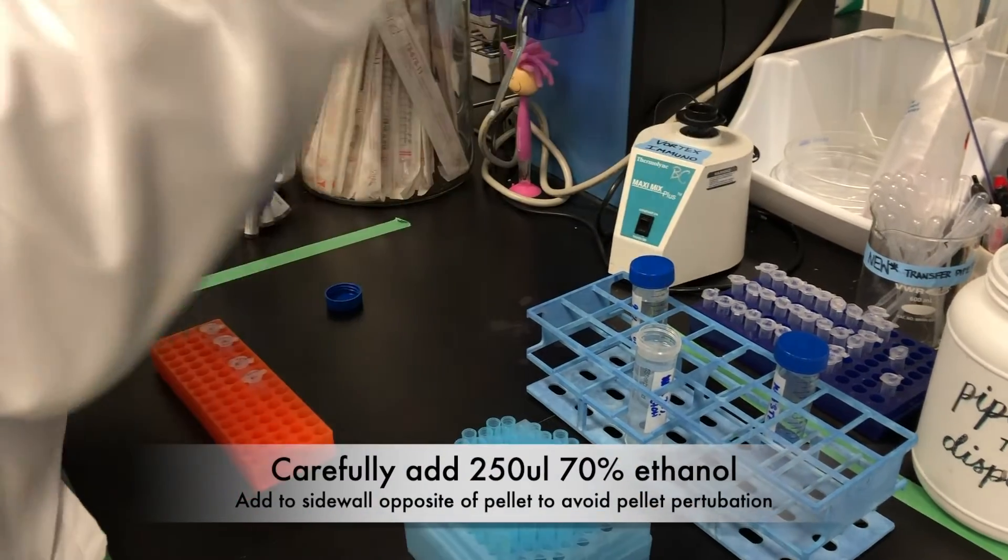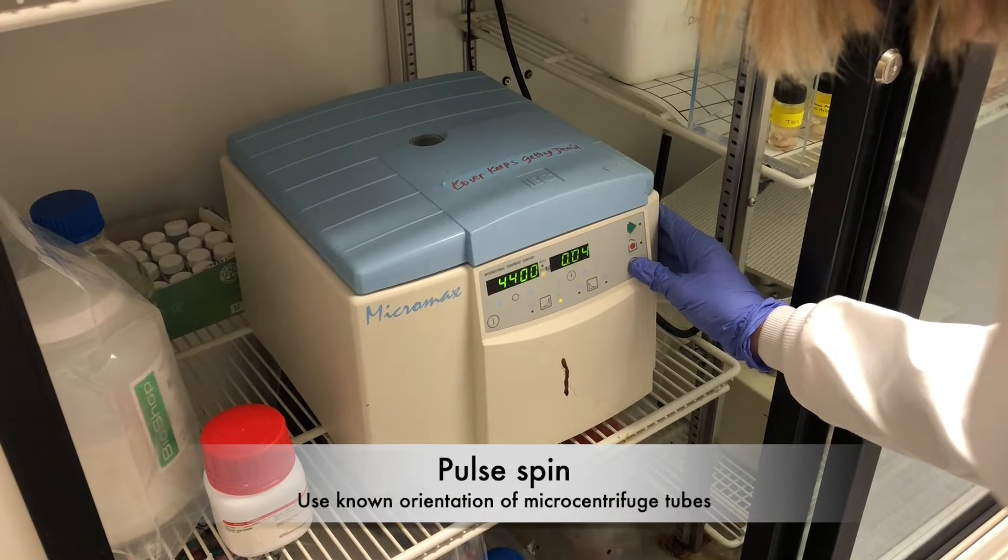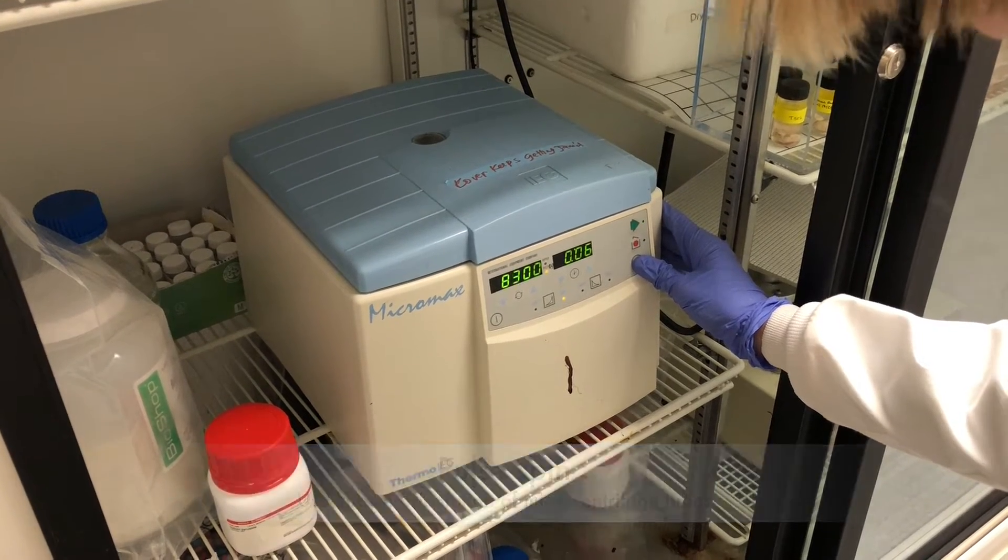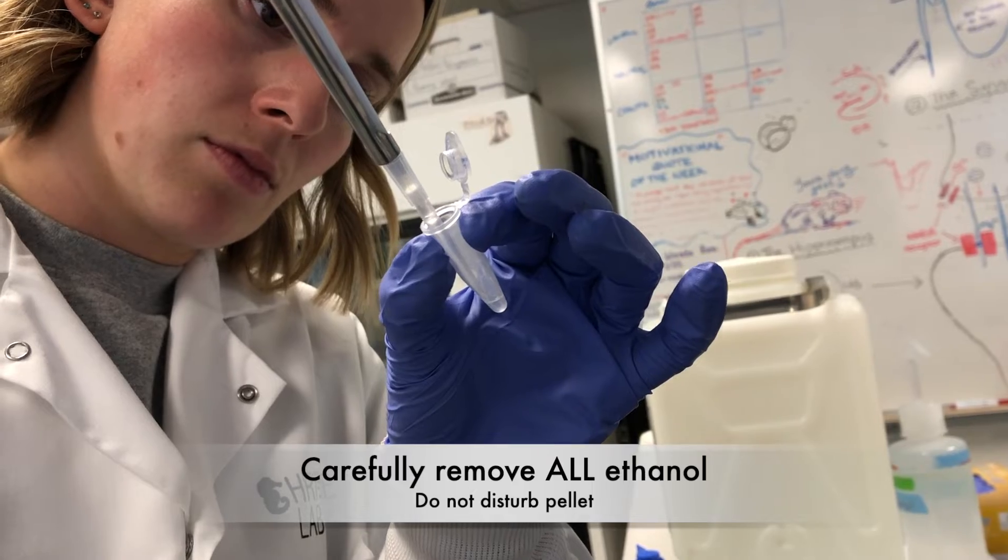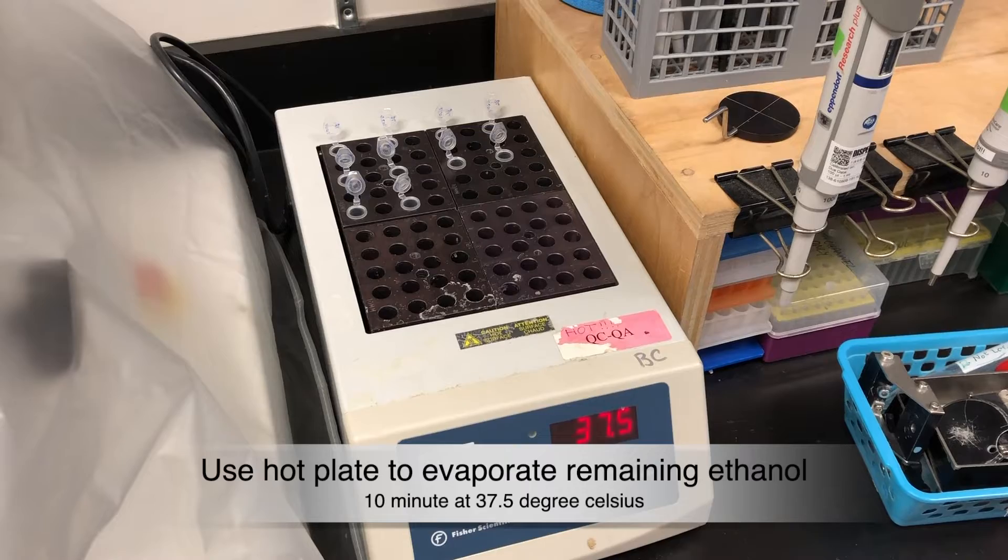Now a 70% ethanol wash will be used to purify the DNA. Pulse spin the DNA and ethanol, and then very carefully remove all of the ethanol. Kim wipes can be used to assist this process, as well as a quick dry on the hot plate.